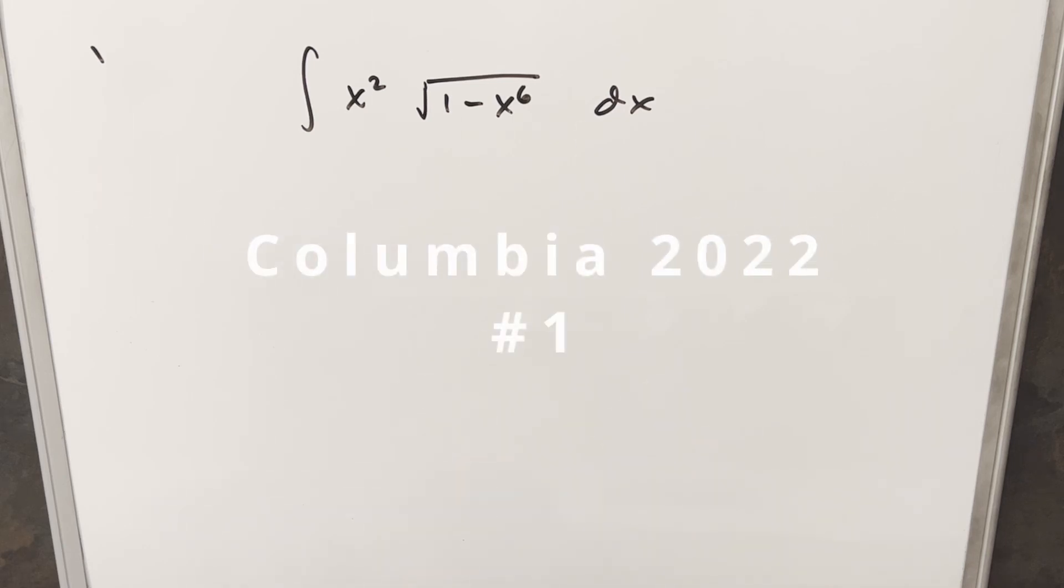Okay, we have here to take another integral from the Columbia integration B2022. This one here is problem number one. We have the integral of x squared times the square root of 1 minus x to the 6 dx.